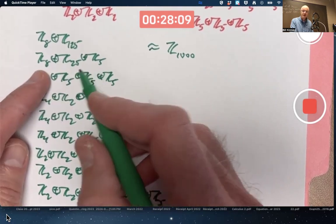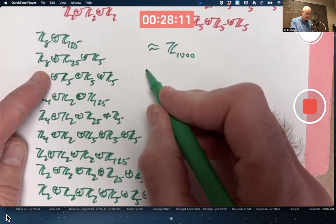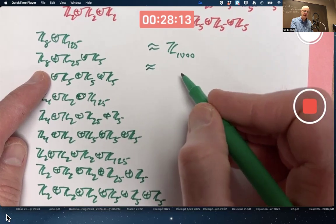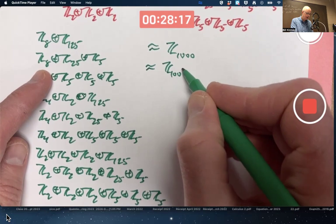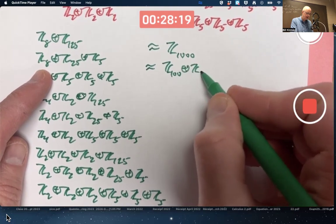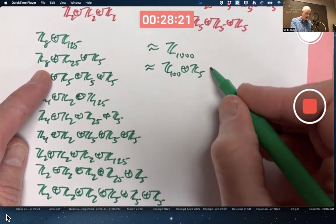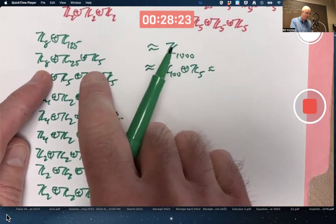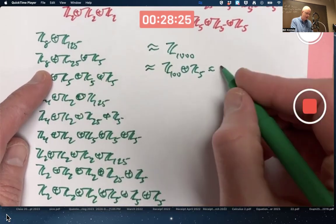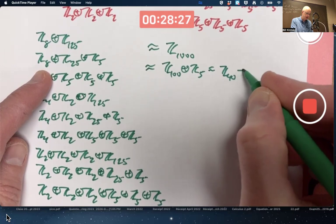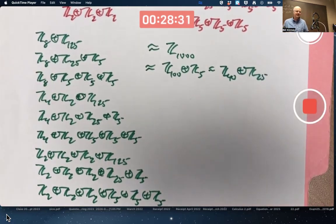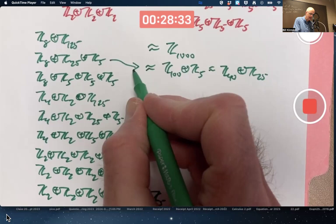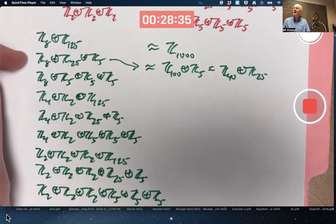Here, 5 and 25 are not relatively primed, but 5 and 8 are, and 25 and 8 are. Or I could, for example, multiply 8 and 25 and get Z100 external direct product with Z5, or I could multiply 8 and 5 and write this as Z40 external direct product with Z25. Those are two different ways of writing this isomorphism class.